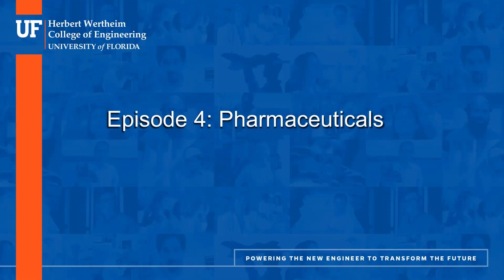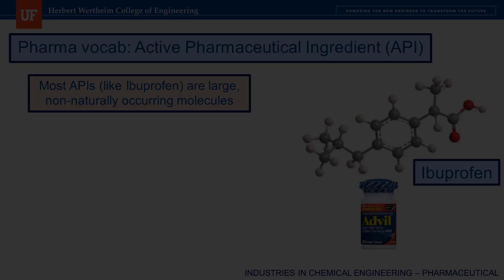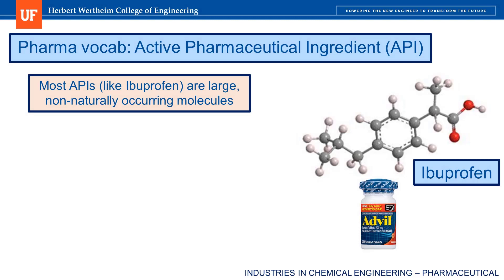Episode 4: Pharmaceuticals. An acronym that you absolutely must know in order to work in the pharmaceutical industry is API — the active pharmaceutical ingredient.